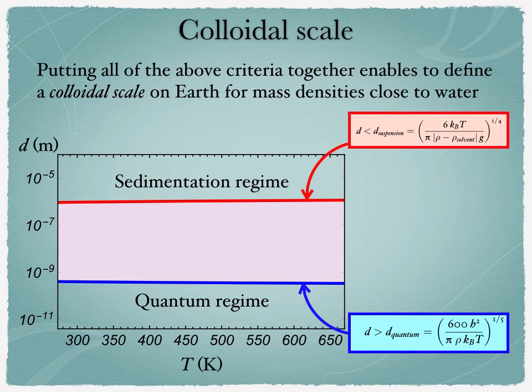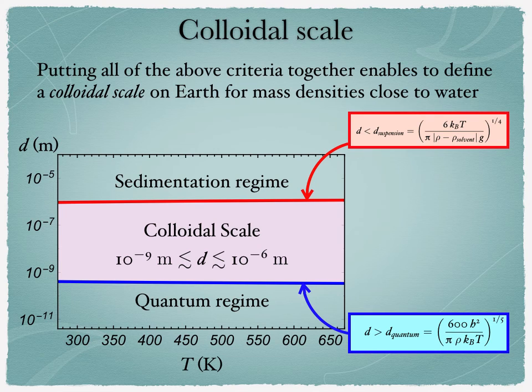We can put all of this together into a single plot where we plot the actual diameter as a function of the temperature in kelvin. So you see here in red you have the d_suspension—anything above this red line would be particles that are sedimenting on Earth for a solvent close to water in density—and then anything below the blue curve would be in the quantum regime. And in between the two, you've got the magical realm that will be interesting, which is that of colloidal scale, and that's a standard scale in fact between one nanometer in size and one micron. So this is the typical scale we'll be dealing with when we talk about colloidal particles in the next lectures to come.